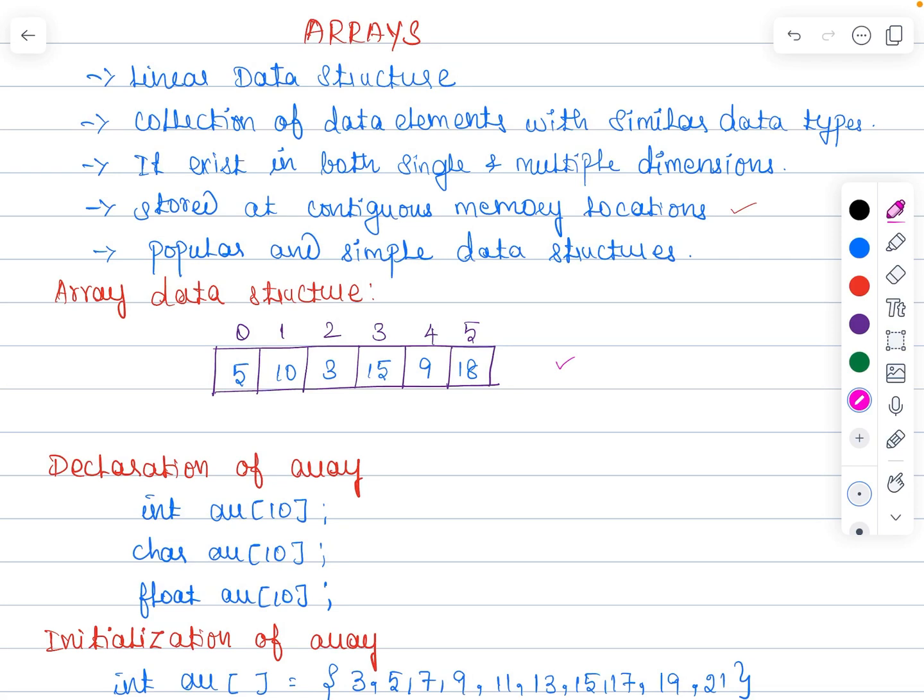In this video I am going to discuss about array data structure and its operations. Array is a linear data structure which is defined as a collection of elements with similar data type which are stored in contiguous memory locations.